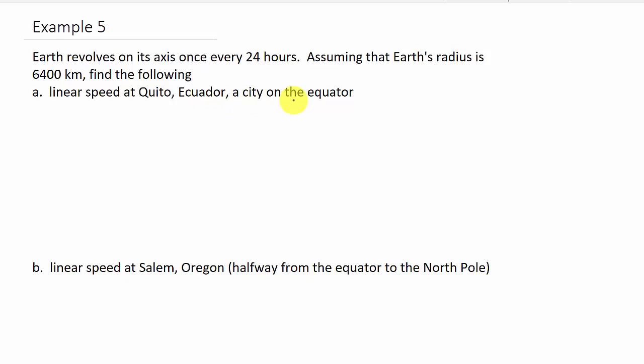Notice they don't tell us what units to put the answer in. They give us the time in hours and they give us the distance in kilometers. So since they didn't tell us, this is the units they give us. So let's find our answer in kilometers per hour. First let's write down the formula. Linear velocity is S over T. And we know S is R times theta.